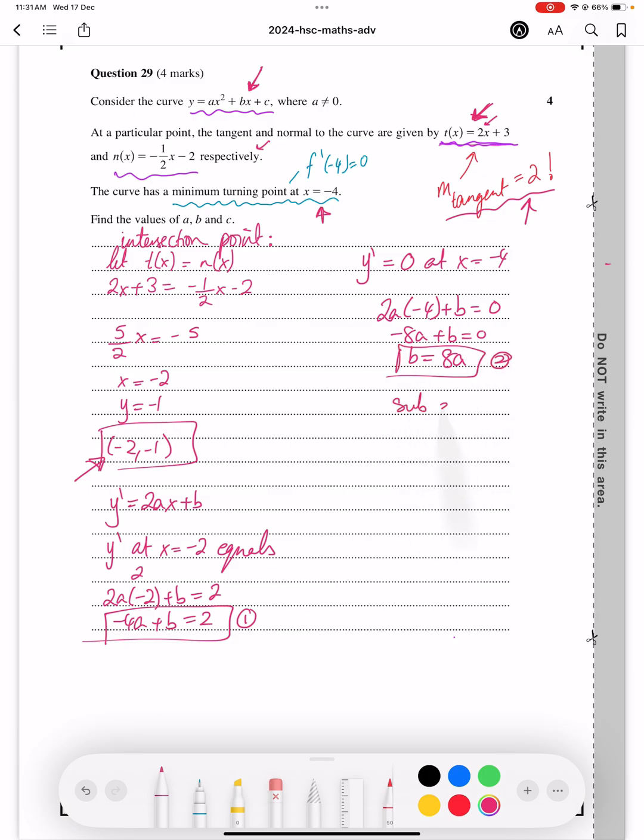Now, we're going to sub 2 into 1, and so that gives us minus 4a plus b equals 2, that gives you 4a equals 2, therefore a equals half. Box that.